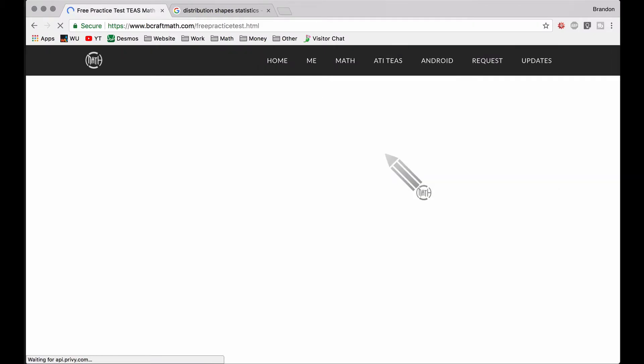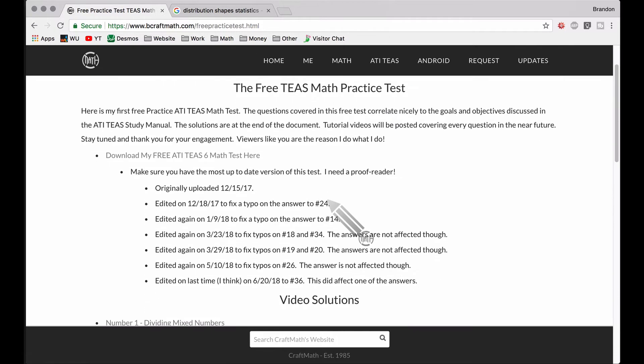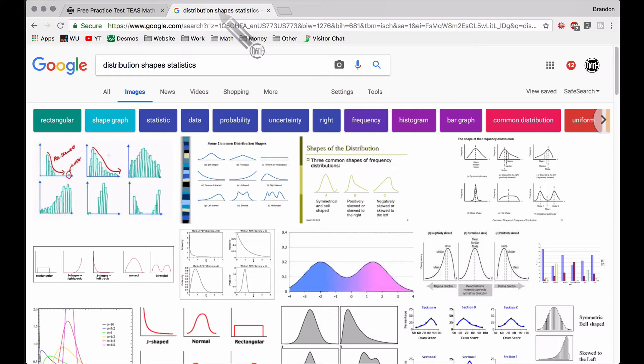This free practice test - I did edit one last piece. I edited number 36, I wanted to change the way it looked, and this will have an effect on one of the answers. So if you've worked the test out, make sure you watch this video because I did make some changes. The question talks about distribution shapes, so I encourage you to go over to Google, type in 'distribution shapes statistics' and it'll bring up some of these words that I'm getting ready to use.